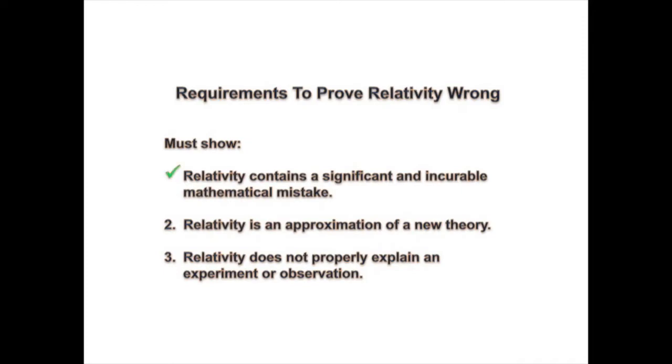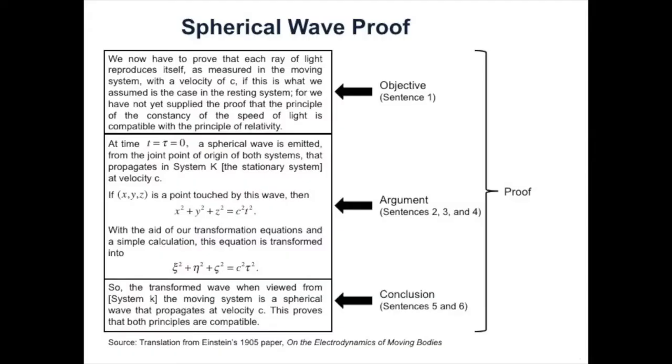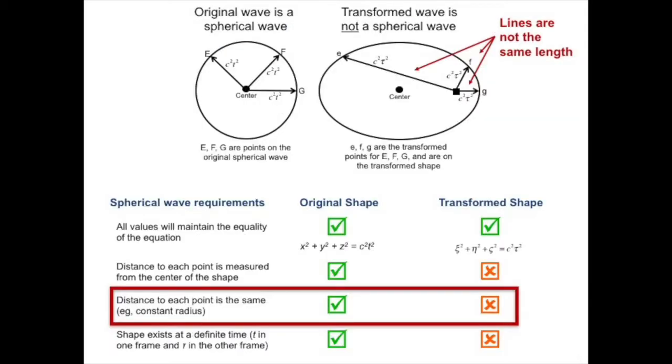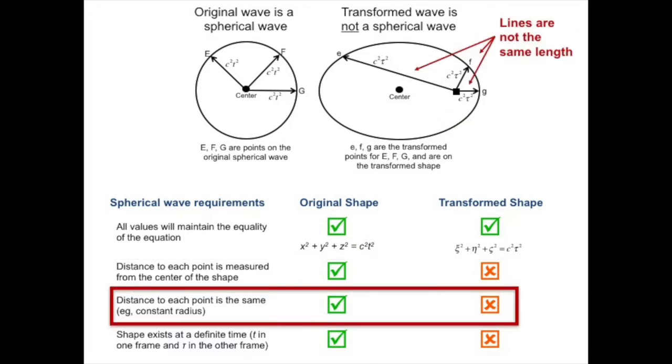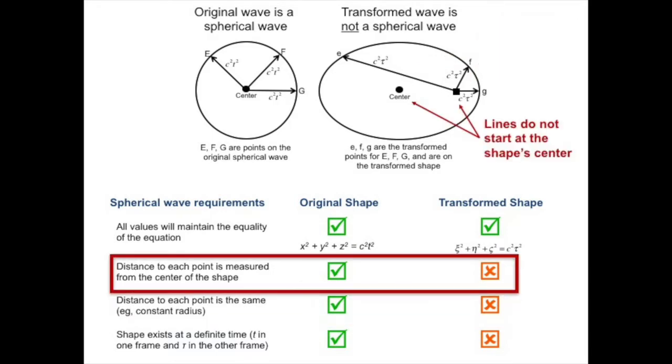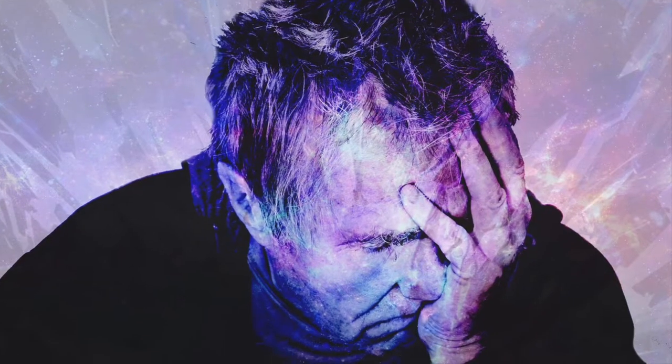I met the first requirement by showing that the spherical wave proof found in Einstein's 1905 paper fails. A spherical wave requires a constant radius that starts at the shape's center. These conditions, a constant radius and starting at the shape's center, were not met in Einstein's transformed shape and is why the proof fails.